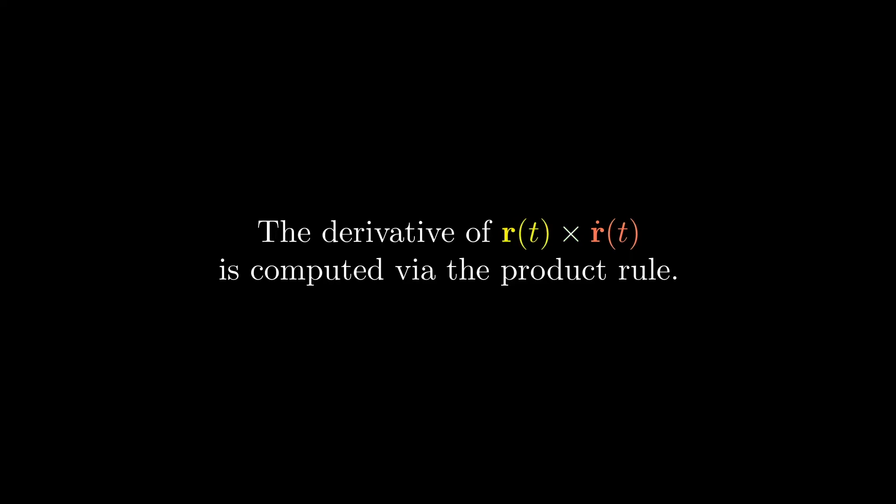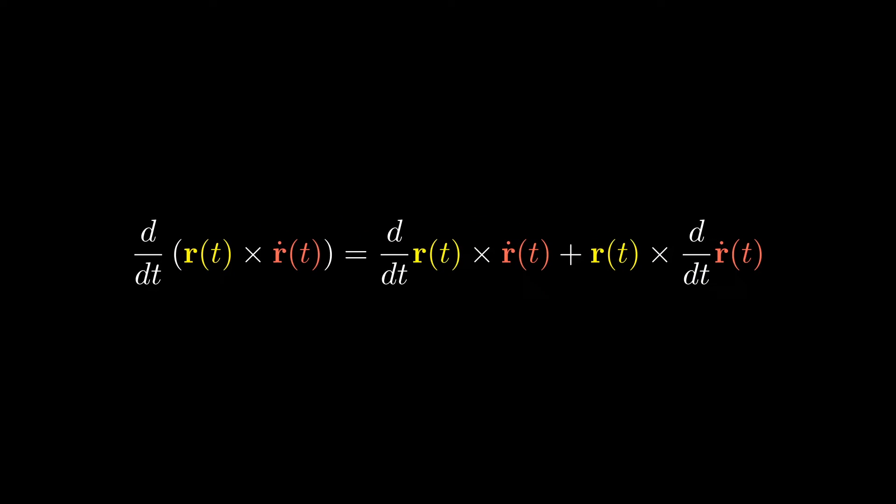Now, the derivative of r cross r dot is computed via the product rule. Here's what the product rule looks like.